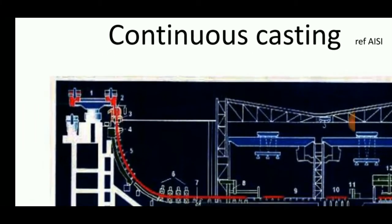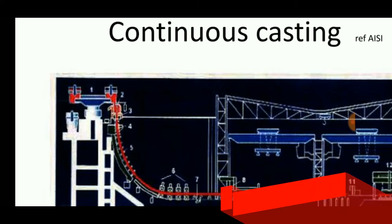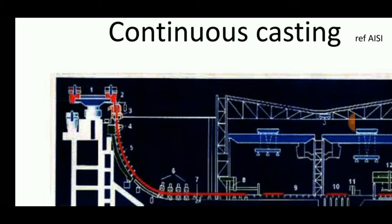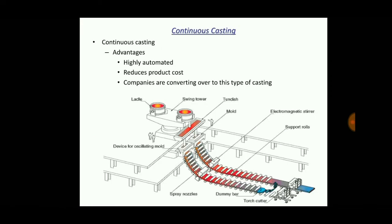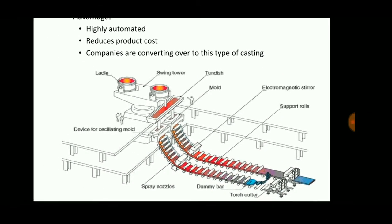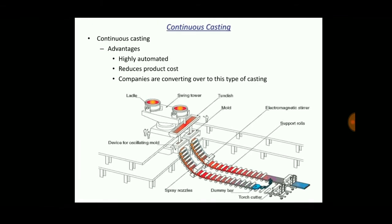The ingot is placed in a furnace and the molten metal comes through a tundish and a water-cooled mold placed at the bottom, so it solidifies and comes down, and a torch is used to cut it at a desired length. This simple diagram shows the continuous casting process. It is a highly automated process that reduces production cost, and companies are converting to this type of casting because of its high productivity.